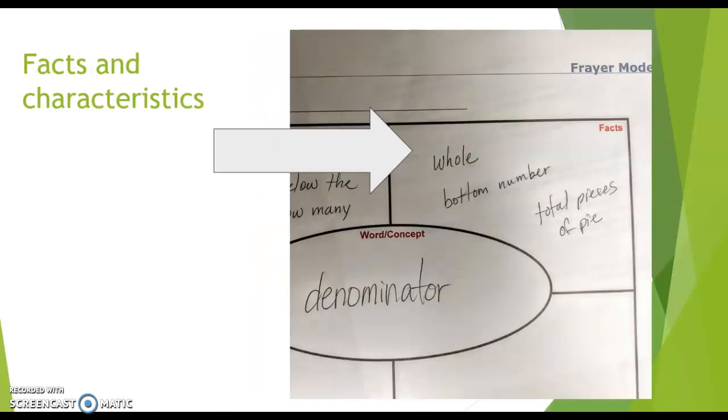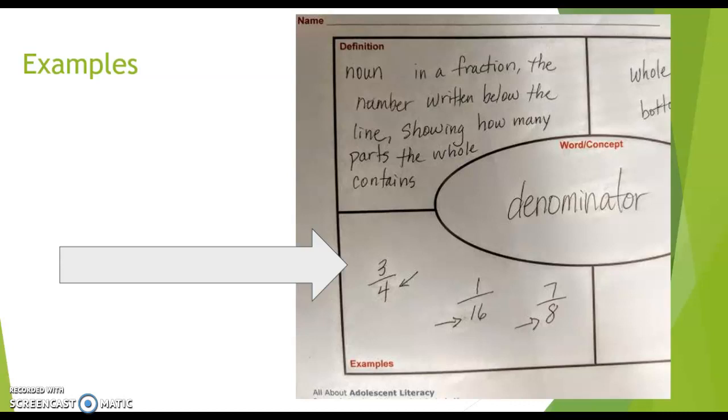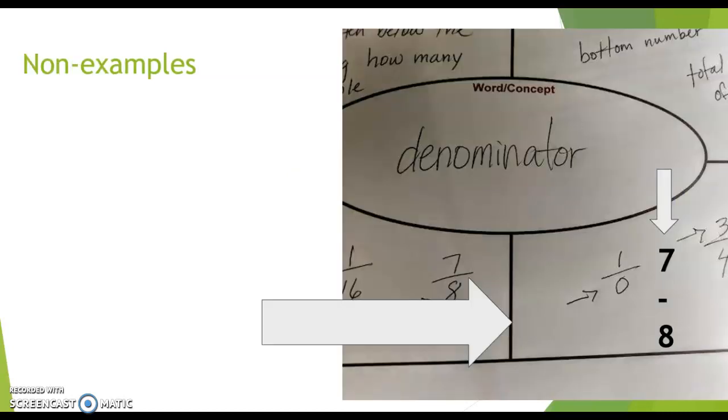The next one is the facts or characteristics of the word denominator. And here's examples and you see me pointing to the bottom, the bottom number which is the denominator. And here's non-examples, zero cannot be a denominator and of course the seven is actually the numerator.